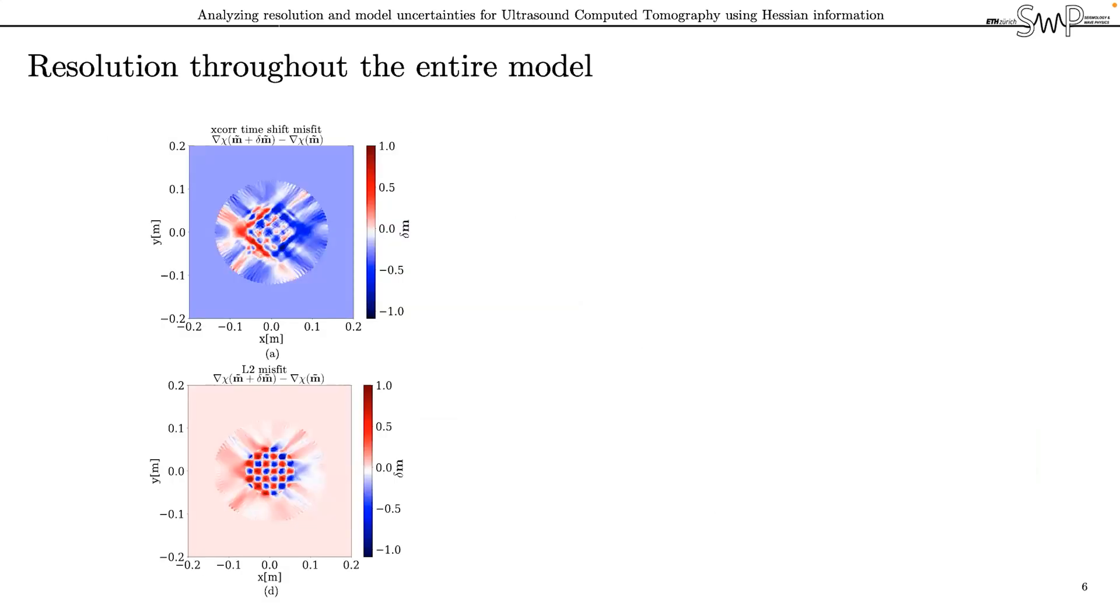In full waveform inversion, one needs to choose a misfit functional and there are many forms to choose from. Most commonly, the L2 difference between the observed and the synthetic waveforms is chosen, which takes into account the entire signals. However, if we want to compare the resolution benefit obtained by using a more sophisticated physical model to describe wave propagation, we should use the same data that is used in straight ray tomography, namely only the first arriving pulses. This is what the cross correlation misfit provides us with and you can see in the upper plot that when we only consider the first arrivals, the checkerboard pattern is not well resolved. Individual features are smeared along the source receiver line in contrast to the result obtained with an L2 misfit where the structure is well recovered.